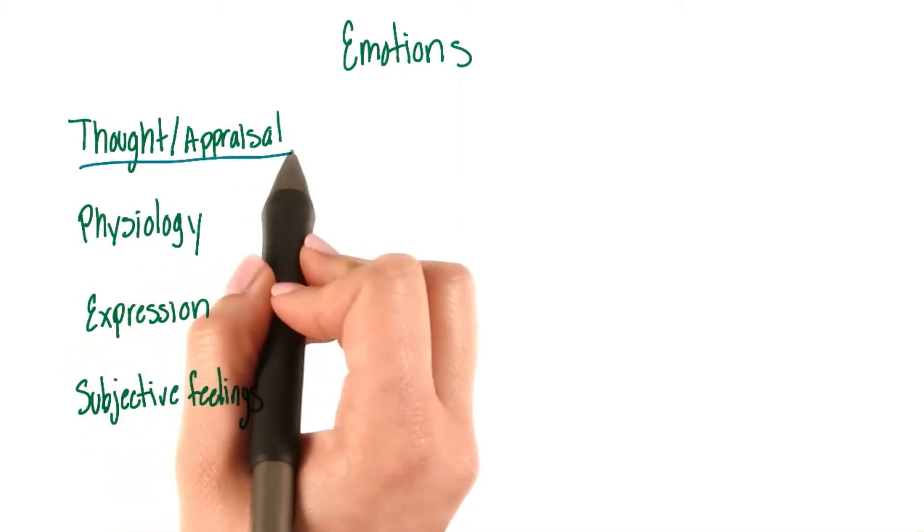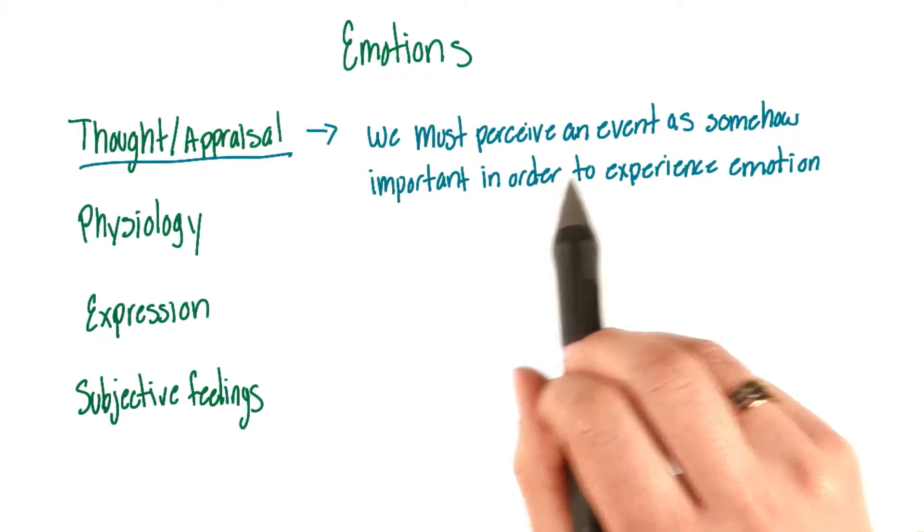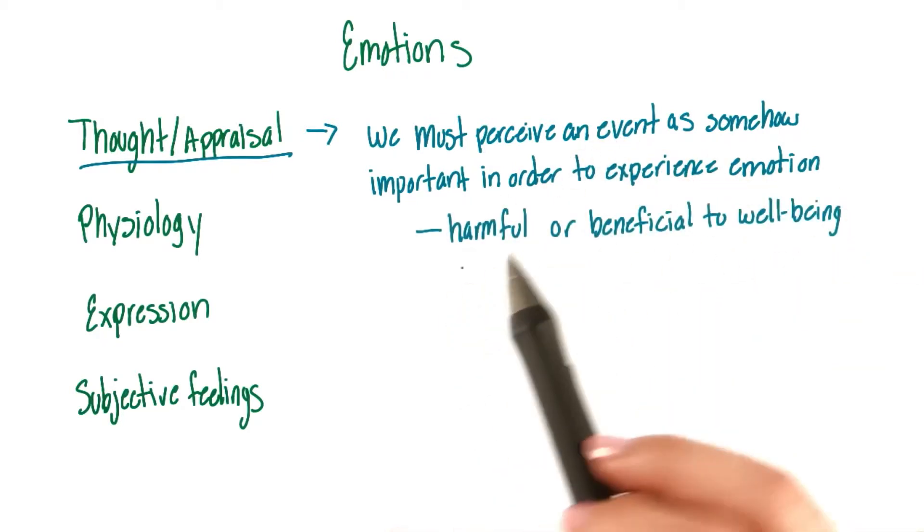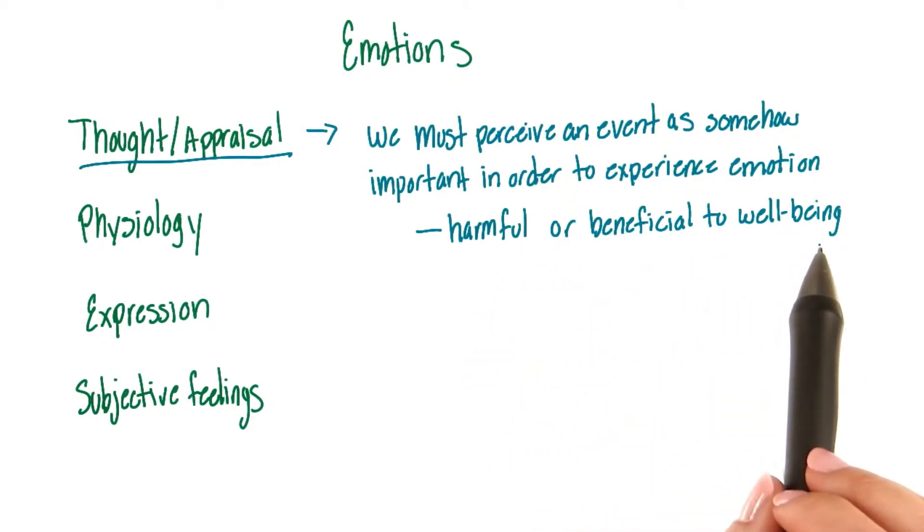So let's start with thought and appraisal. This is necessary for all emotions. We have to perceive an event as somehow important in order to experience emotion. That is, we have to appraise the event as in some way harmful or beneficial to our well-being.